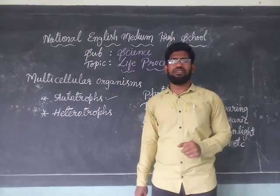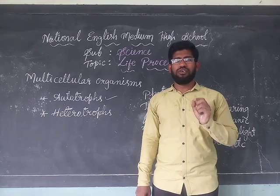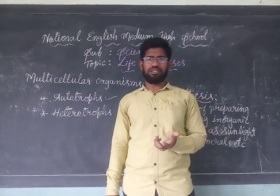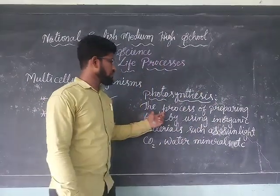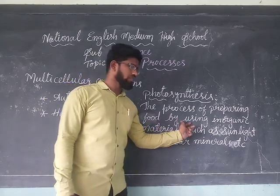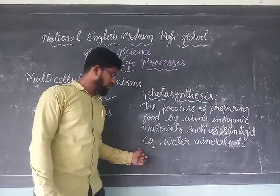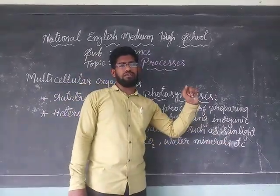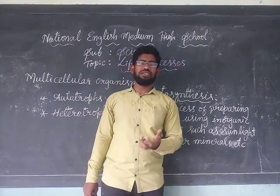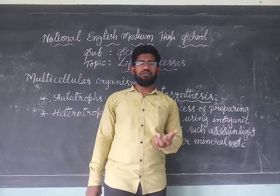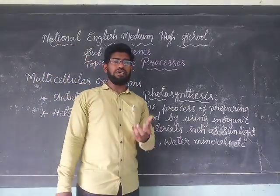Autotrophs prepare their food through a process called photosynthesis. What is photosynthesis? Photosynthesis is the process of preparing food by using inorganic materials such as sunlight, carbon dioxide, water, and minerals. As a result of photosynthesis, plants can prepare their own food in the form of starch. Let's see the chemical equation — how we can write the photosynthesis equation.